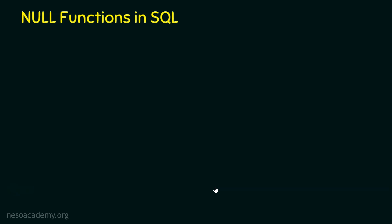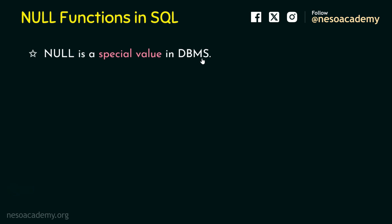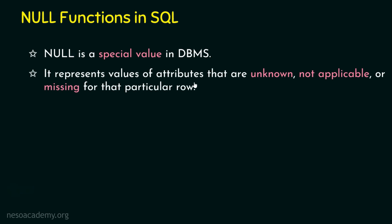Before understanding what null functions are, I'd like to reiterate a few things about null values, because these null functions are going to be operated on null values. Null is a special value in DBMS. Due to the advancements of databases over the years, databases are enriched to store any type of data — not just numbers, text, or decimals — and even multimedia data. One different type of value stored is a null value. The null value represents the value of attributes that are unknown, not applicable, or missing for a particular row. When we have a situation where a value is not known, not applicable, or missing, null values are really helpful.